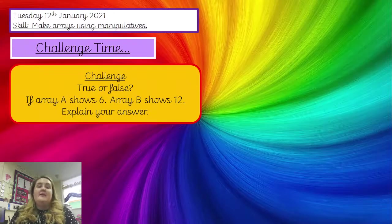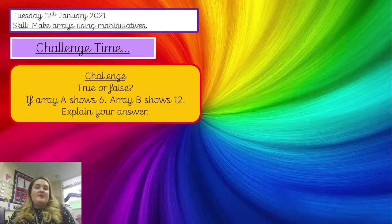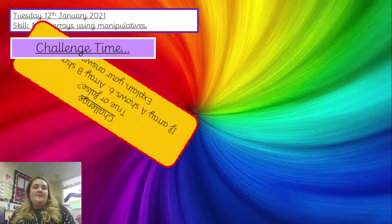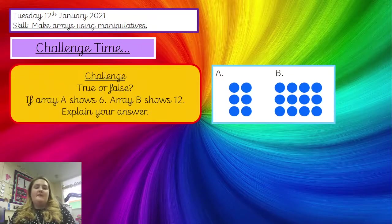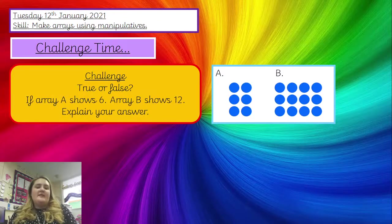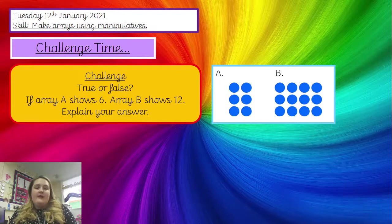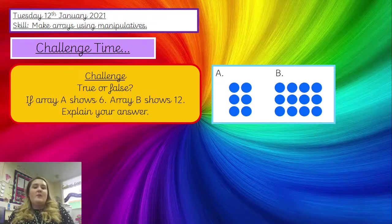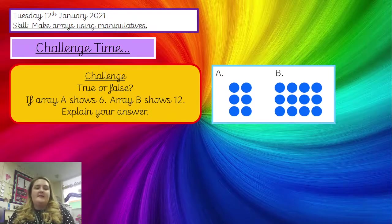Well done for completing your independent practice. Now it is time to challenge ourselves. Your challenge for today is true or false: if array A shows 6, array B shows 12. Pause the video, write your answer, and use your reasoning language — is this statement true or false? In A we have got 6, and array B shows 12 because B is double A. So we have got 6 in A and 12 in B because it is double — we've got double the amount of counters in B.